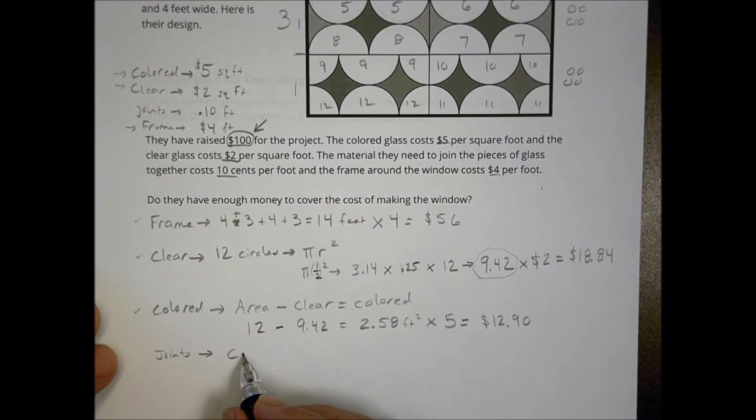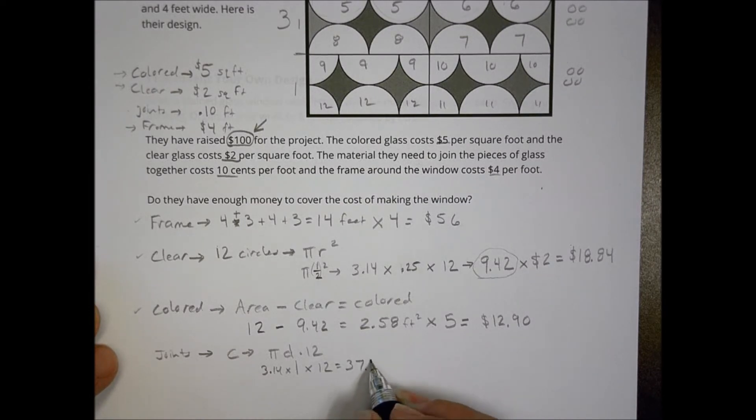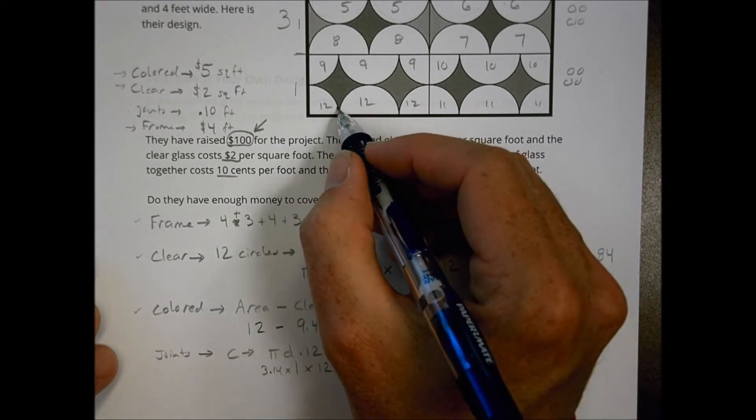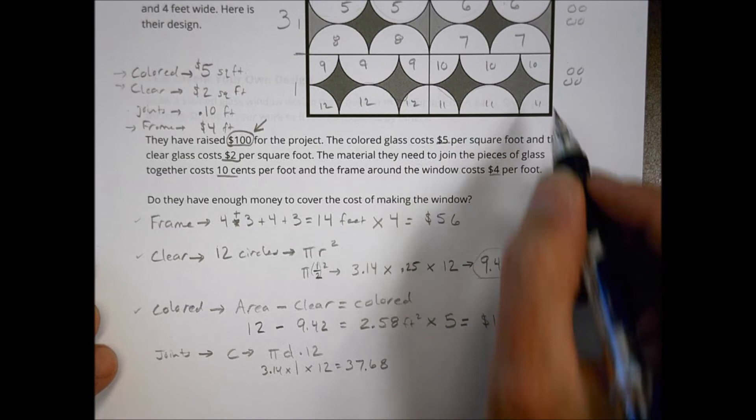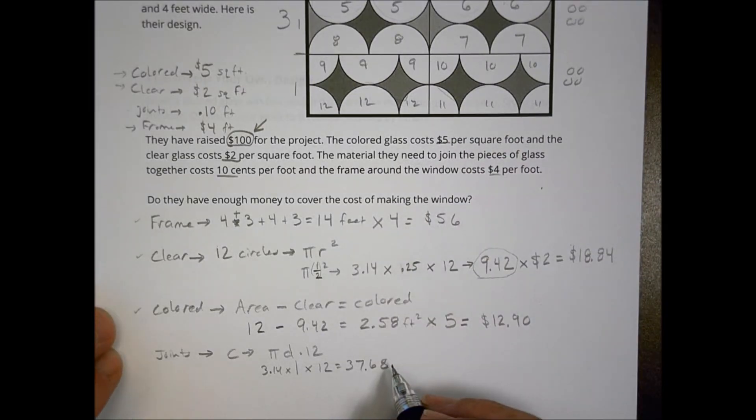So I need to find the circumference of the 12 circles, which is going to be pi times the diameter times 12 circles. And in this case here, that would be 3.14. We're going to multiply by 1 this time because that is the diameter. And multiply it by the 12 circles to have 37.68 is the circumference of the wire that goes around all of the circles. So that price right there is going to be multiplied by 10 cents. So the wire that goes around the circles is 37.68 times 10, which is going to be a total of 3 dollars and 76 cents.